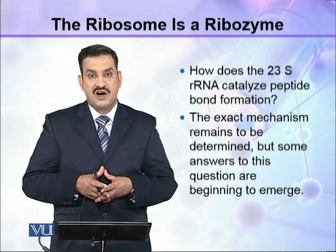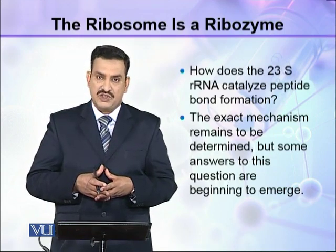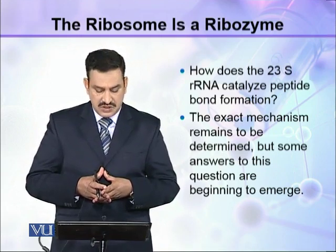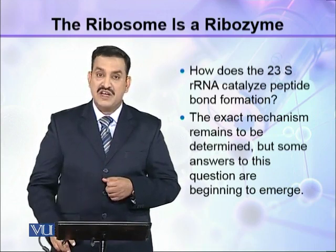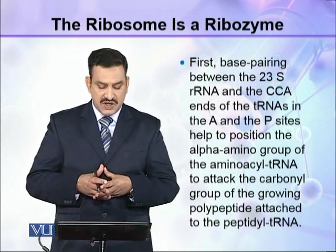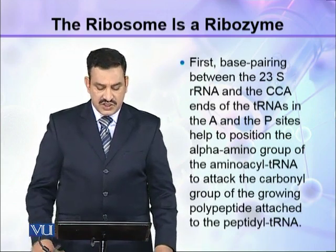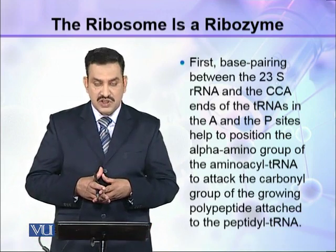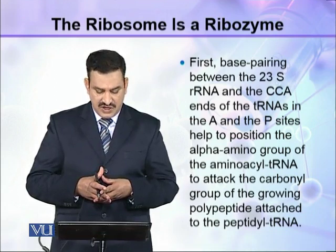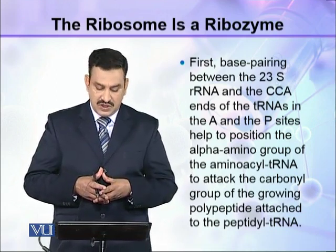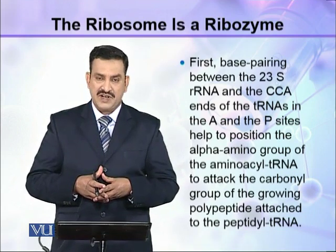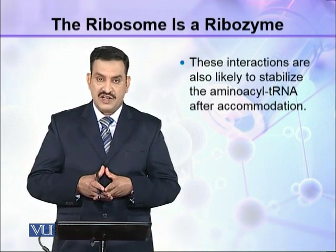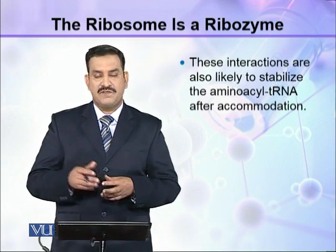How does the 23S rRNA catalyze peptide bond formation? What is the mechanism of this catalysis? The exact mechanism remains to be determined, but some answers are beginning to emerge. Base pairing between the 23S rRNA and the CCA ends of the tRNAs in the A and P sites helps to position the alpha amino group of the aminoacyl-tRNA to attack the carbonyl group of the growing polypeptide attached to the peptidyl tRNA. These interactions are also likely to stabilize the aminoacyl-tRNA after accommodation.